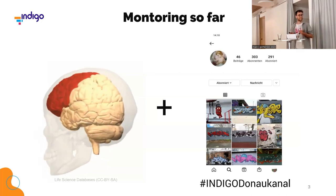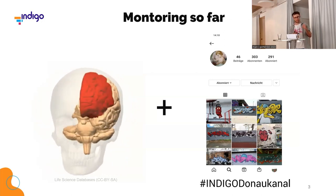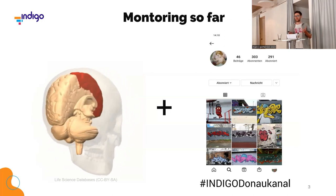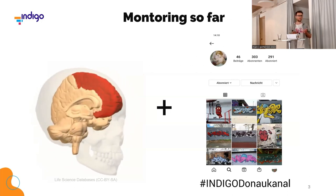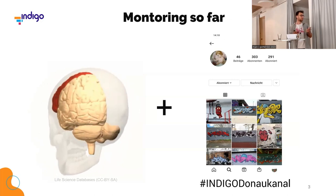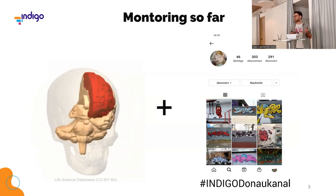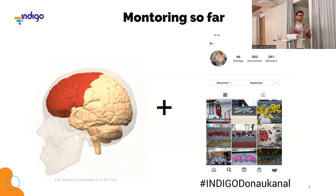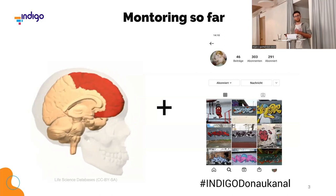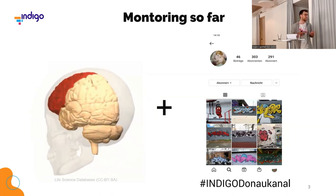I'll show you how we did change detection so far: we mainly relied on memory — specifically Stefan's memory. He is just a graffiti expert on Vienna and knows the Danube Canal like probably nobody else, so he was spotting most of the new graffiti. But of course even he sometimes misses graffiti because they're oversprayed too quickly, or they're just too small, or he just doesn't see them.